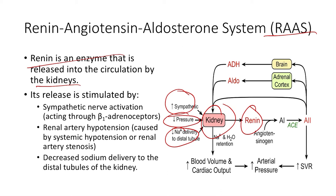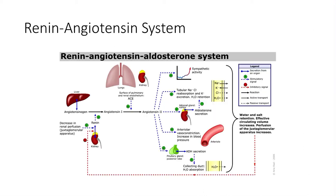Essentially what the RAS system wants to achieve is a normalization of blood pressure. Because it senses lower pressure and lower perfusion through the kidneys, the kidneys have a way of balancing things out.